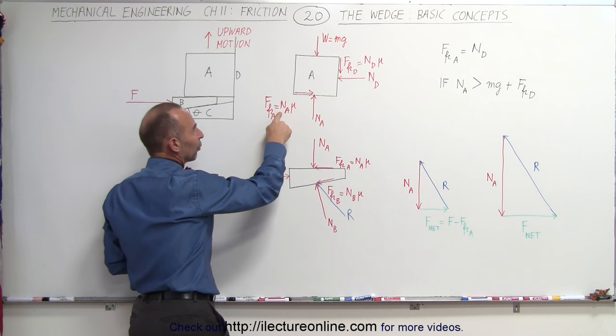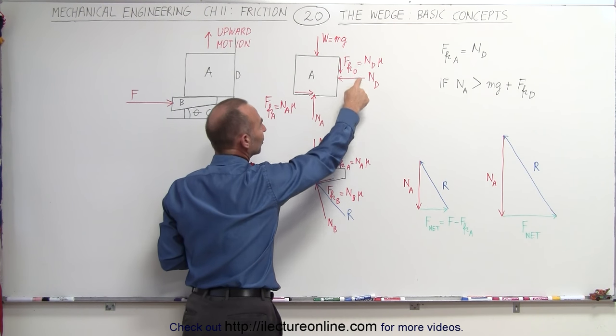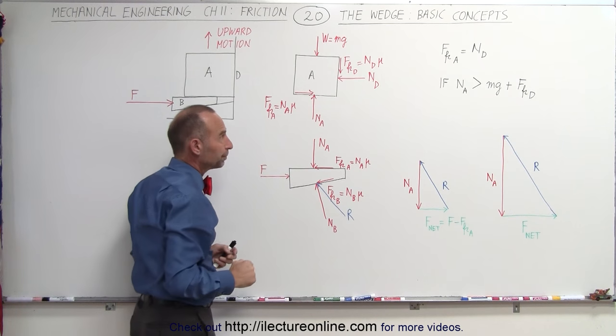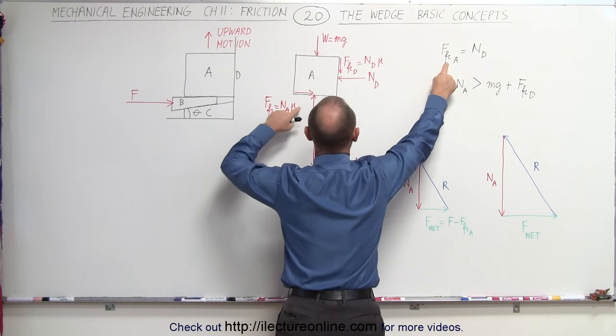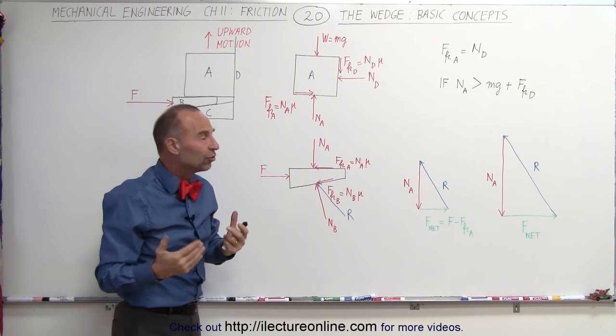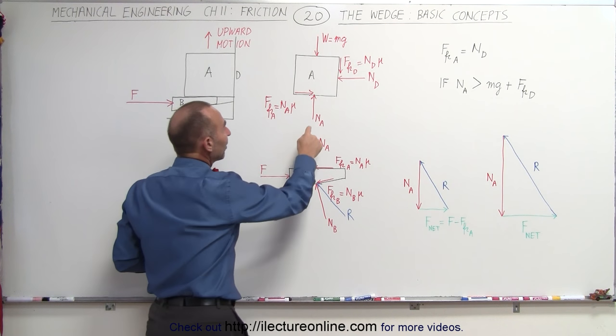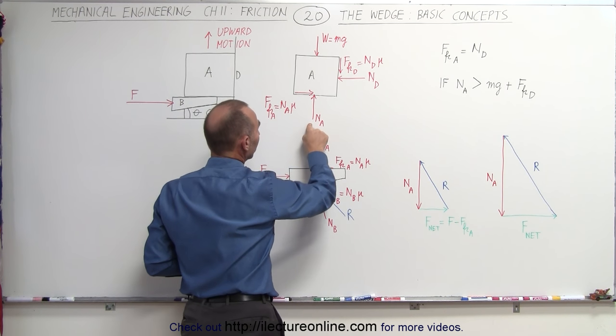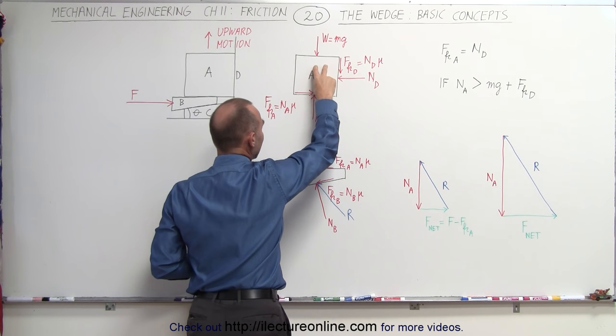The greater this friction force, the greater the normal force here, the greater the friction force there. Notice the friction force at A is equal to the normal force at D. And eventually, you can say that if N sub A is large enough to overcome both the weight of object A and the friction force at D,